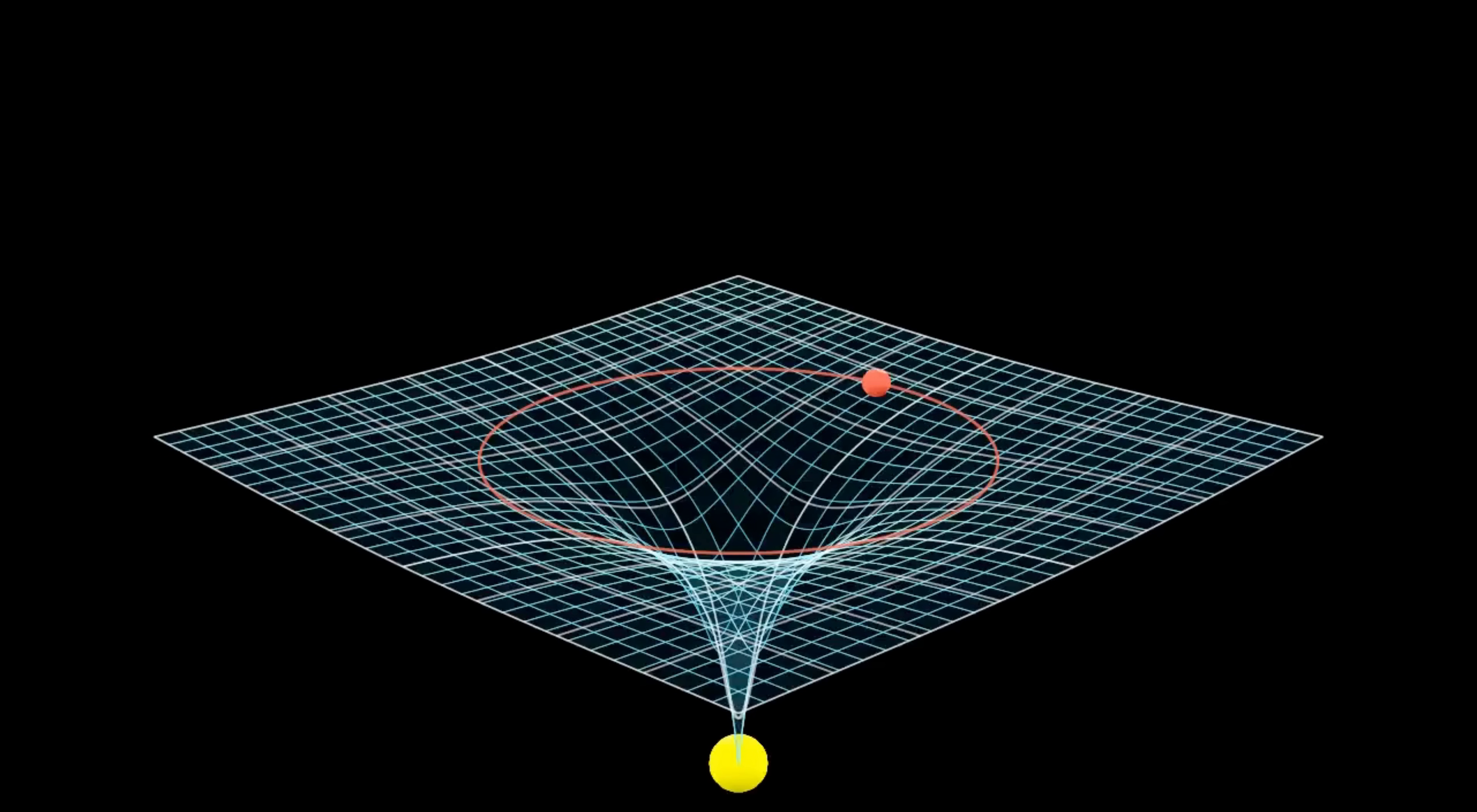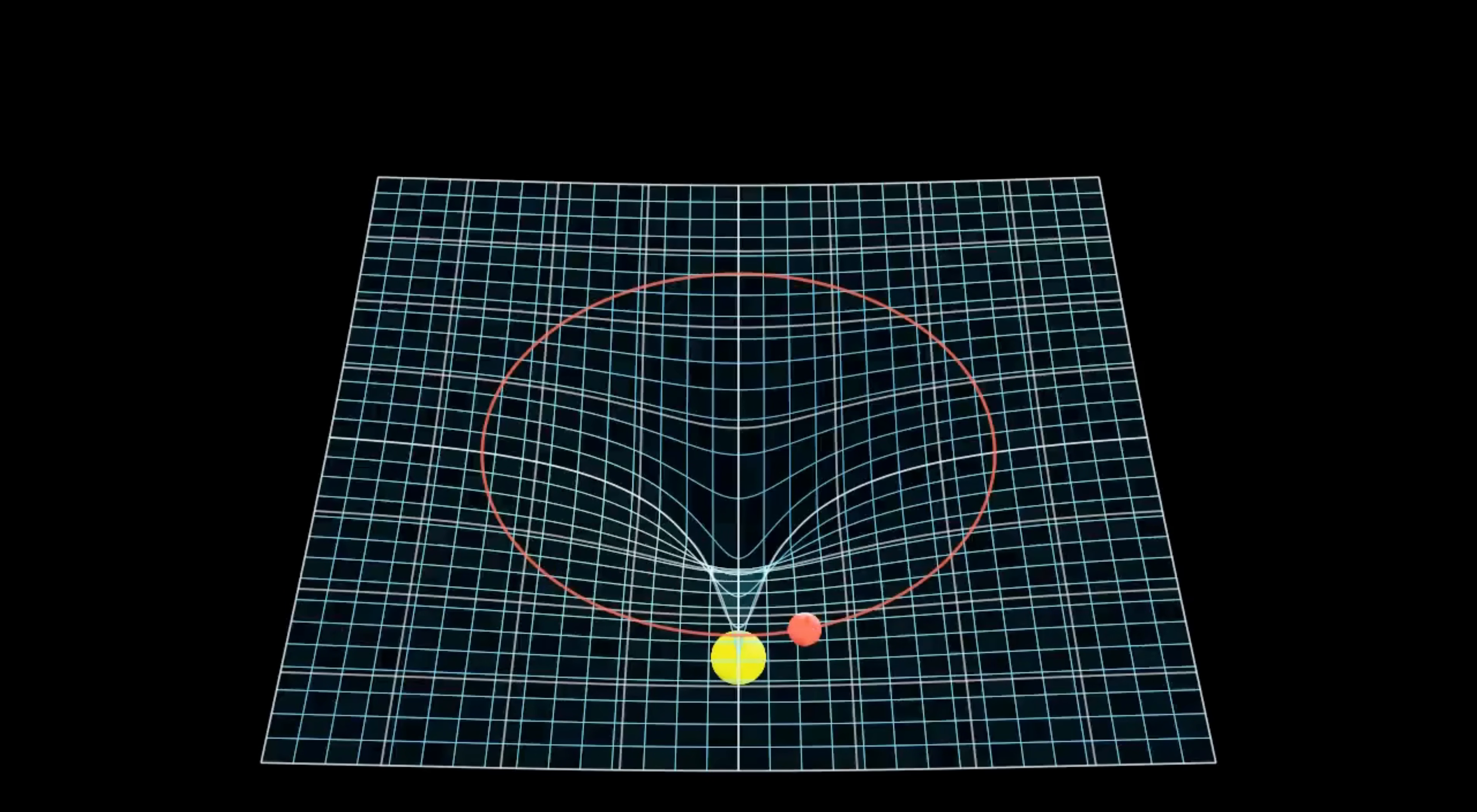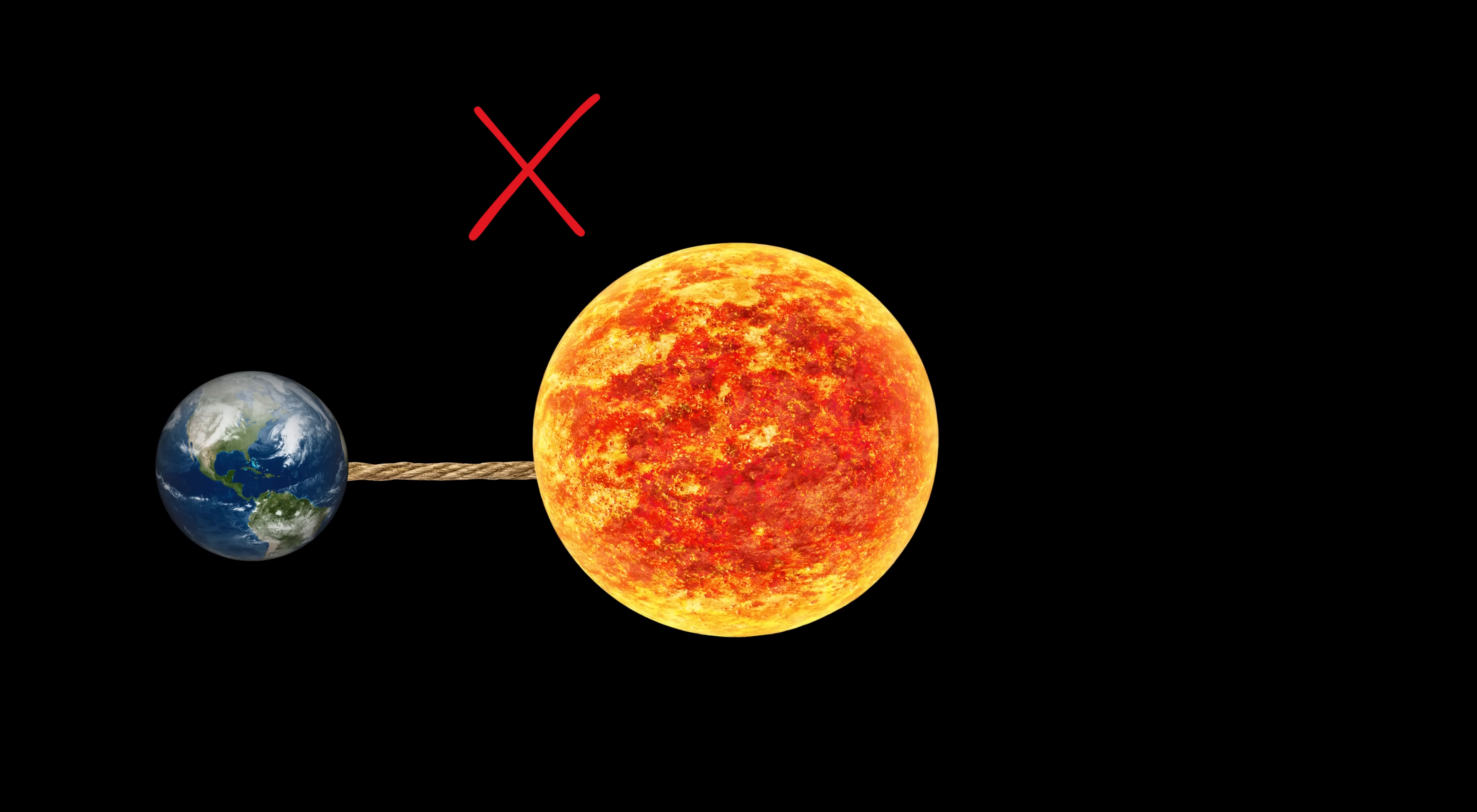As it approaches the dent, it begins to curve around the heavy ball. Not because there's an invisible string pulling it, but because it's following the curved path of the sheet. A heavy object like the sun doesn't pull earth toward it using a force. Instead, it bends the space around it, and earth simply moves along that curved space. Even light follows this curved space.